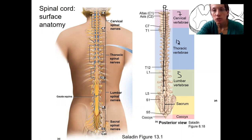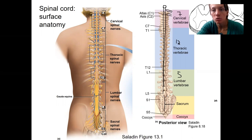Spinal nerves are actually going to arise both from just above the first cervical vertebrae and then in between each one, just like that — as also shown over here.